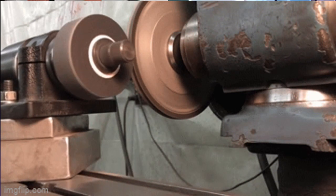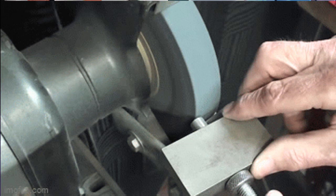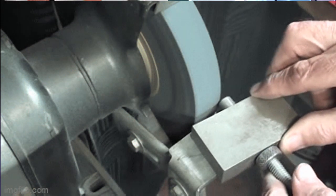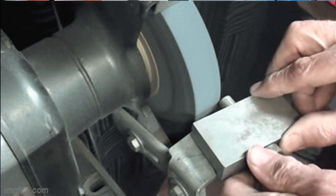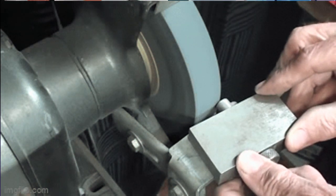The function is to break off the dulled grits to expose new sharp grains, and also to remove chips clogged in the wheel.